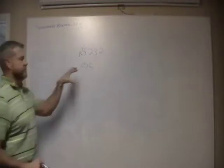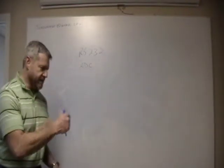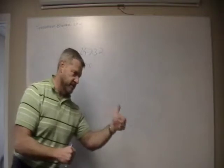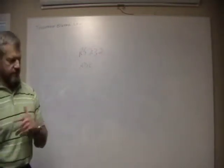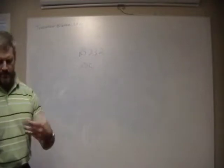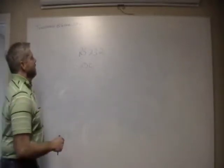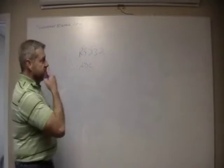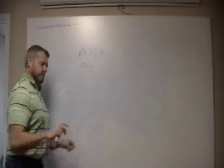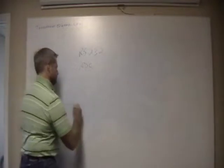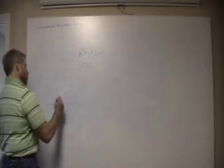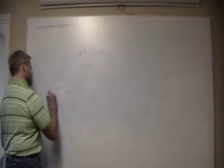RS-232 is a form of serial protocol — one bit at a time. You send ones and zeros, and the other end picks them up, reorders them, and puts them back into bytes from bits. RS-232 specifically uses big voltage levels as far as chips go.